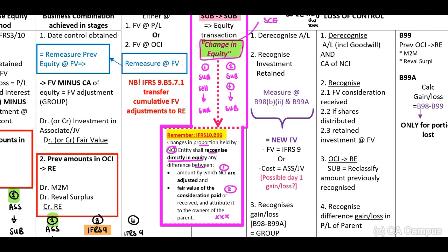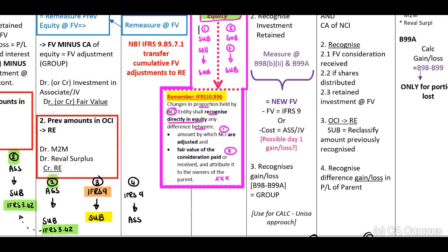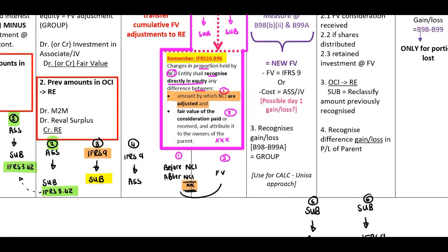How do we calculate this? Number one: the amount by which our NCI will be adjusted. My recommendation is to look at the NCI amount before the change and the NCI amount after the change — that difference is the amount by which the NCI will be adjusted. Number two: the fair value of the consideration received or paid. The difference between these two figures is the amount to be recognized in your change in ownership.